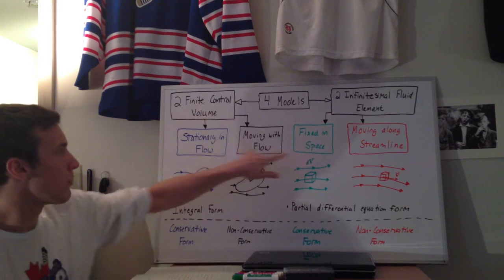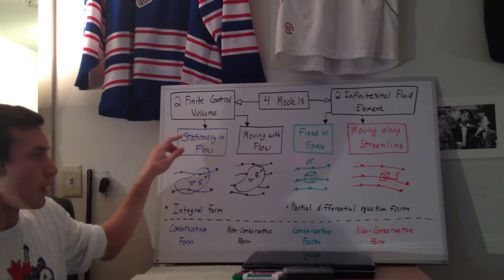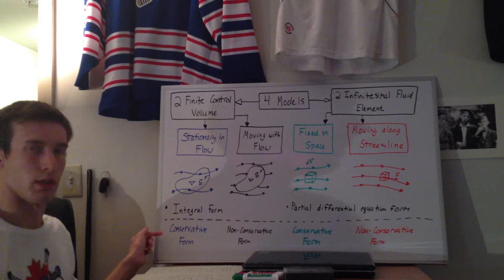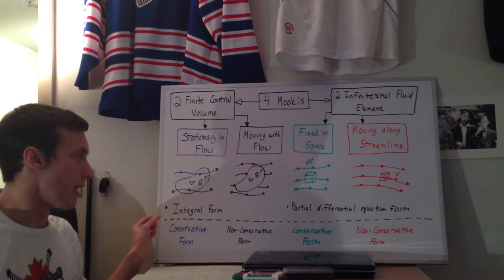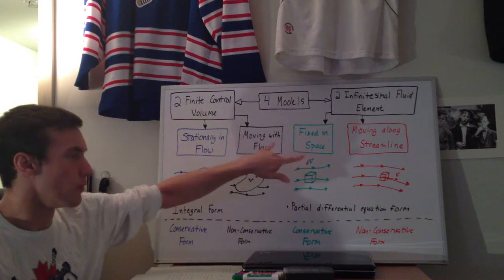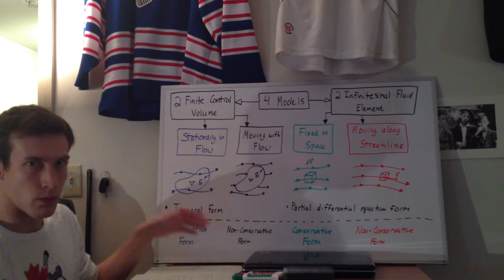For the stationary and the flow, for both of the fixed-in-space, you end up deriving something called the conservative form, which is really only used in CFD. And then for the moving with the flow or moving along the streamline, you generate a non-conservative form.